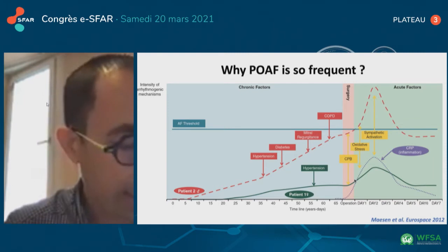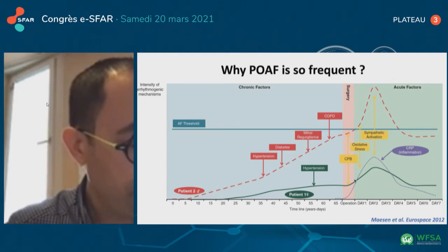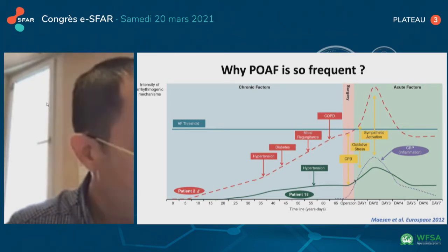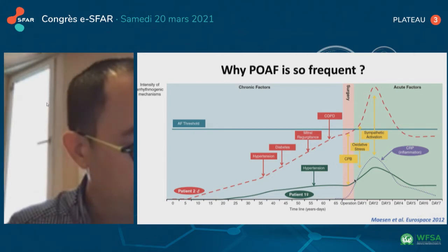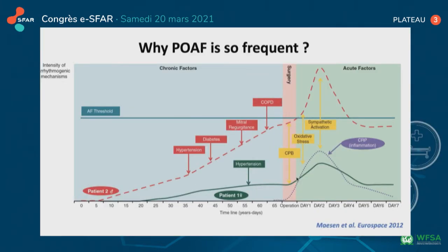Patient 1, as an example, has no relevant cardiovascular history, only hypertension. Patient 2 already developed hypertension at a younger age, followed by diabetes, mitral regurgitation, and COPD at an older age respectively. Both patients have no history of atrial fibrillation and undergo uncomplicated coronary artery bypass grafting at the same age. However, only patient 2 has developed an atrial fibrillation substrate by the time of operation due to the above-mentioned cardiovascular disease.